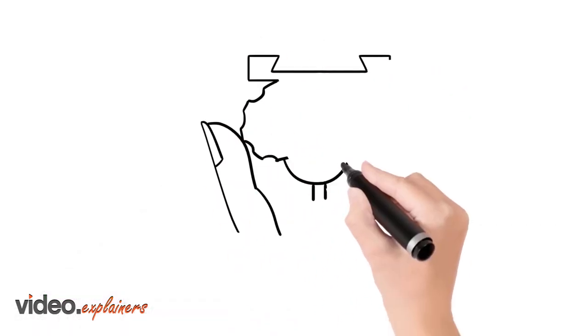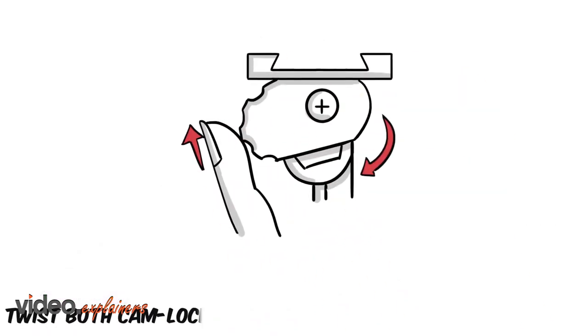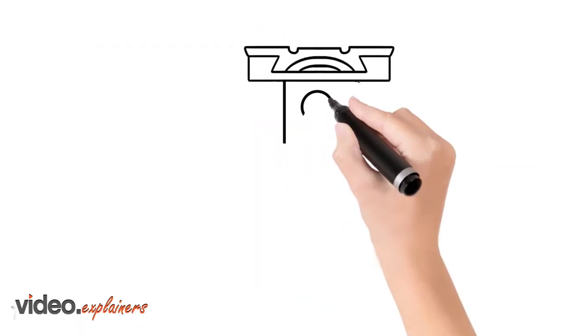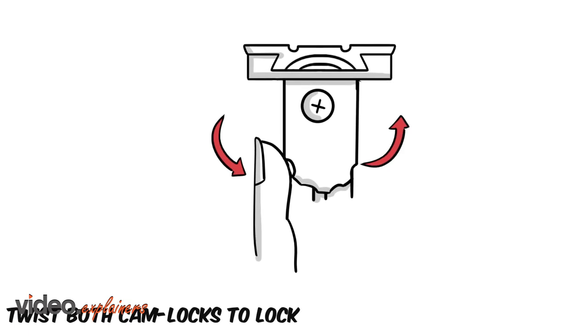To connect the ADD visor, twist both cam locks open. Slide the ADD visor onto the mounting rail. Twist both cam locks closed to lock it in place.